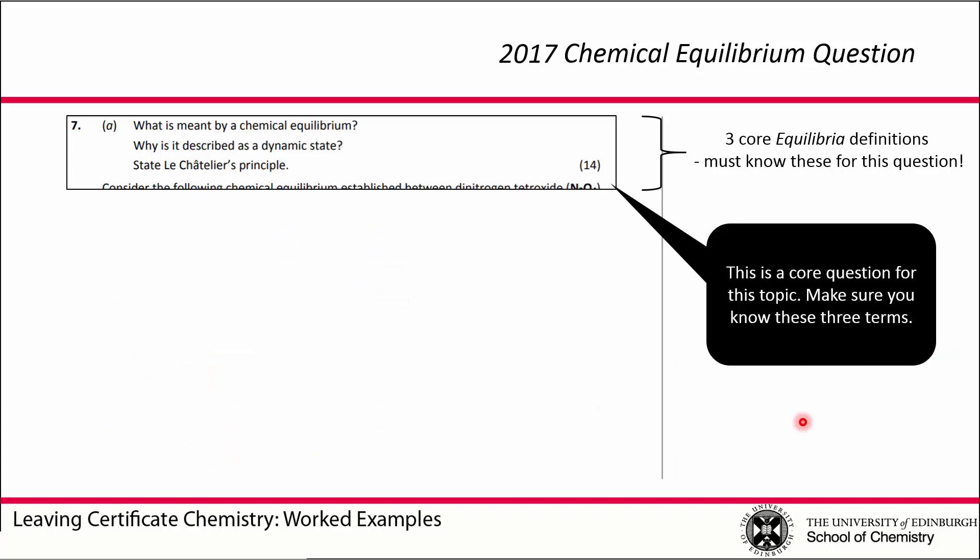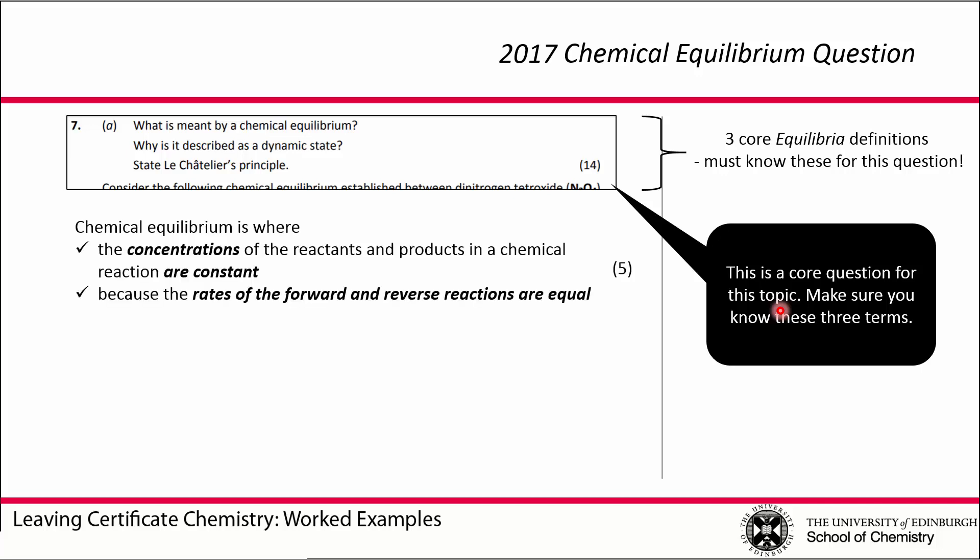The first part covers the core definitions about chemical equilibria — something you should really have nailed down. Chemical equilibrium is where the concentrations of reactants and products in a chemical reaction are constant. The whole idea is that we have a forward reaction and a reverse reaction: reactants are reacting to form products, and products are reverting back to reactants. These two reactions are ongoing continuously, but because the rate of the forward reaction and the reverse reaction are the same, the actual concentrations don't change.